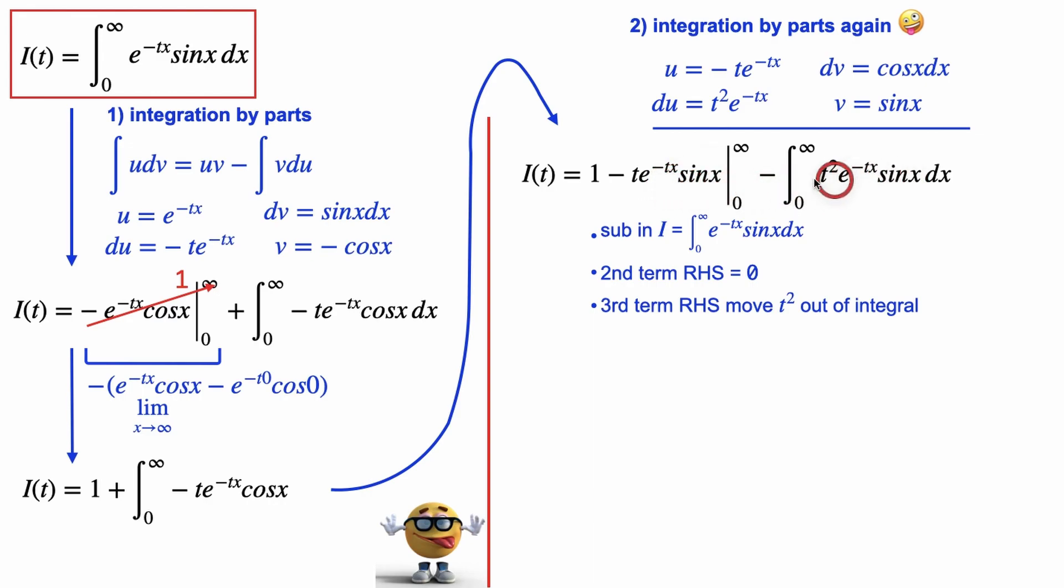And this third term, I'm going to keep it as it is, except this t squared. I'm going to bring it outside the integral. And I can do that because we're not integrating with respect to t. We're integrating with respect to x, and t is like a constant. So that's coming out.